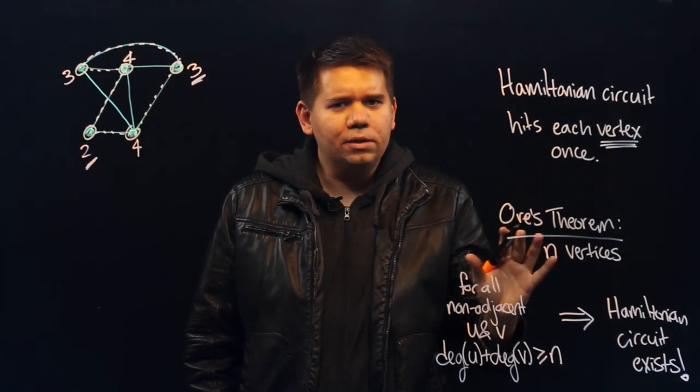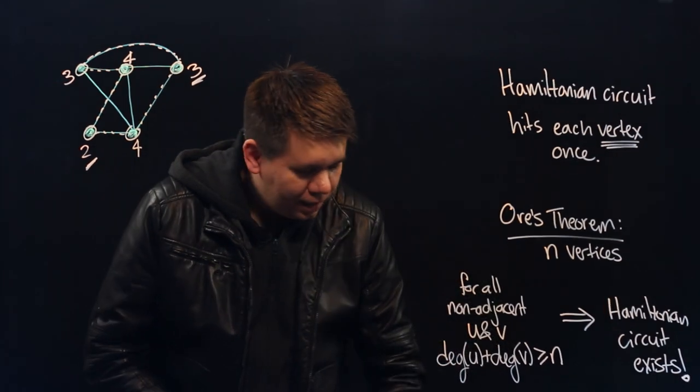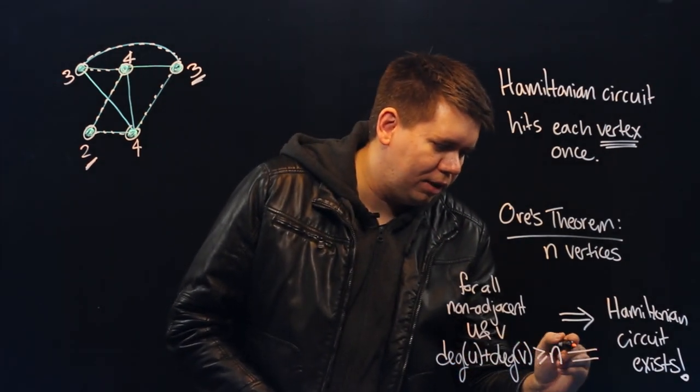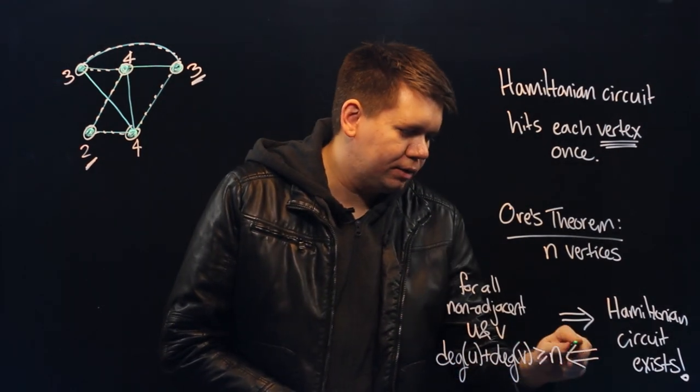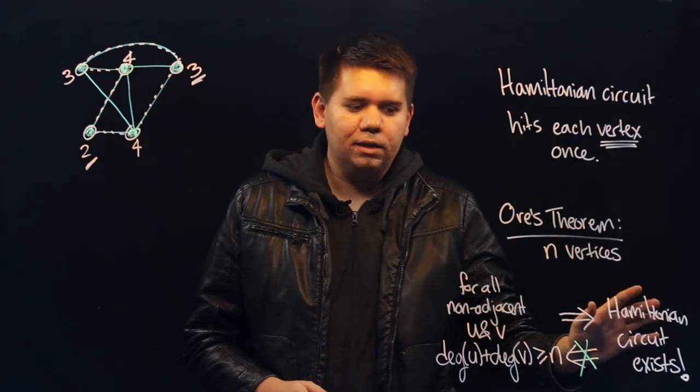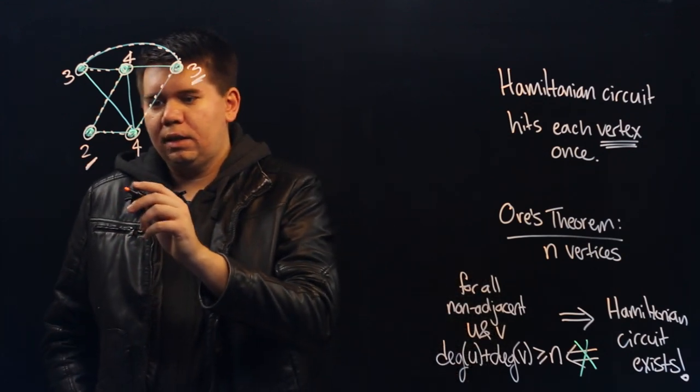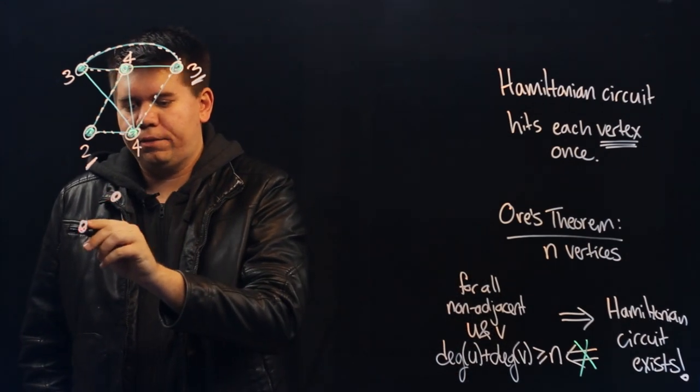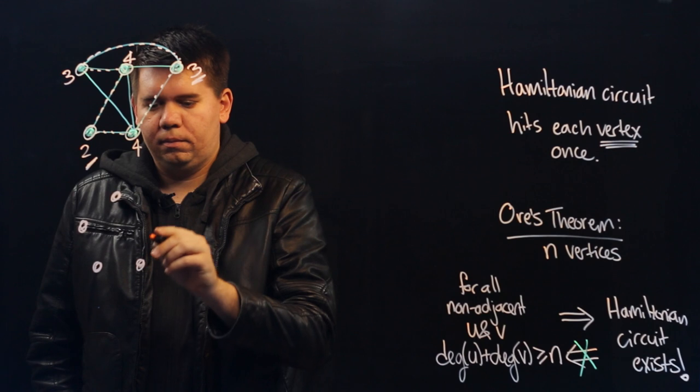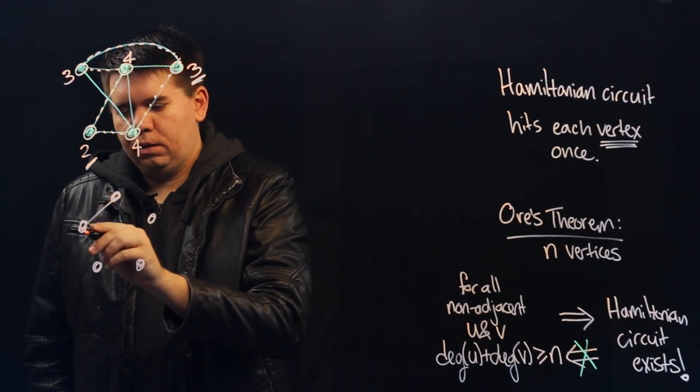But Ore's theorem doesn't go both directions. That is, the converse of the theorem is false. There might exist a Hamiltonian circuit even when we don't satisfy these conditions. For instance, consider this graph, the cycle.